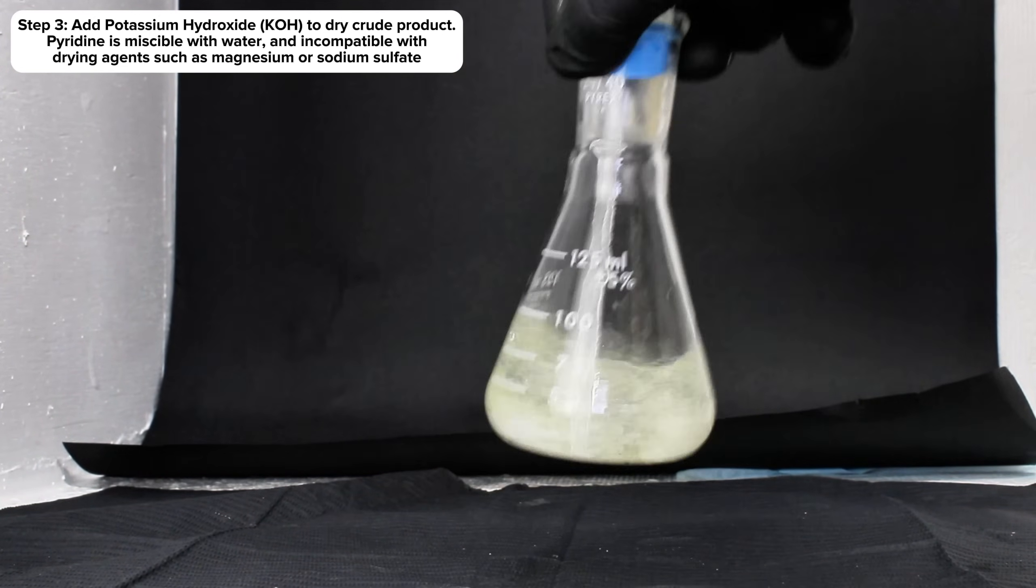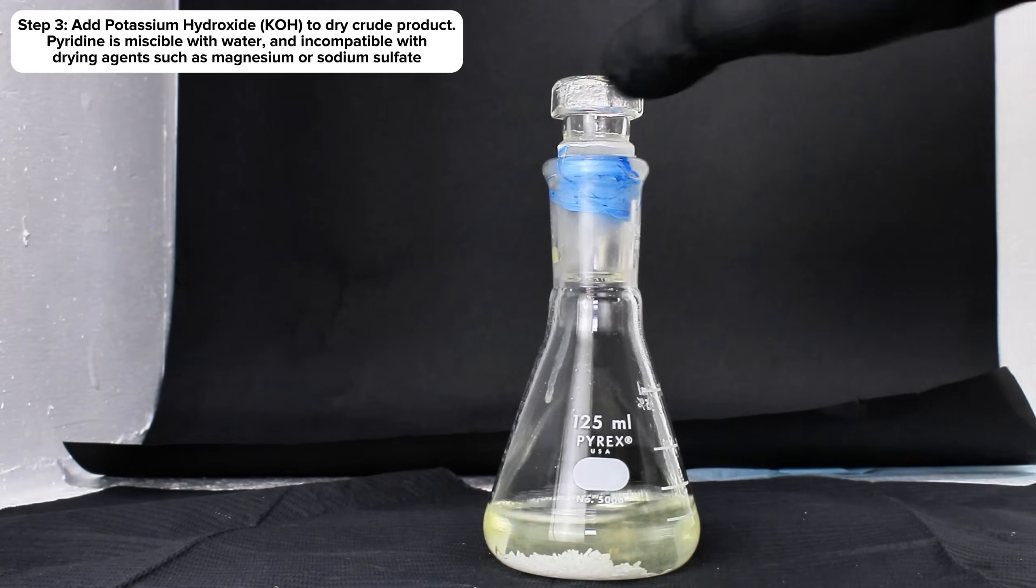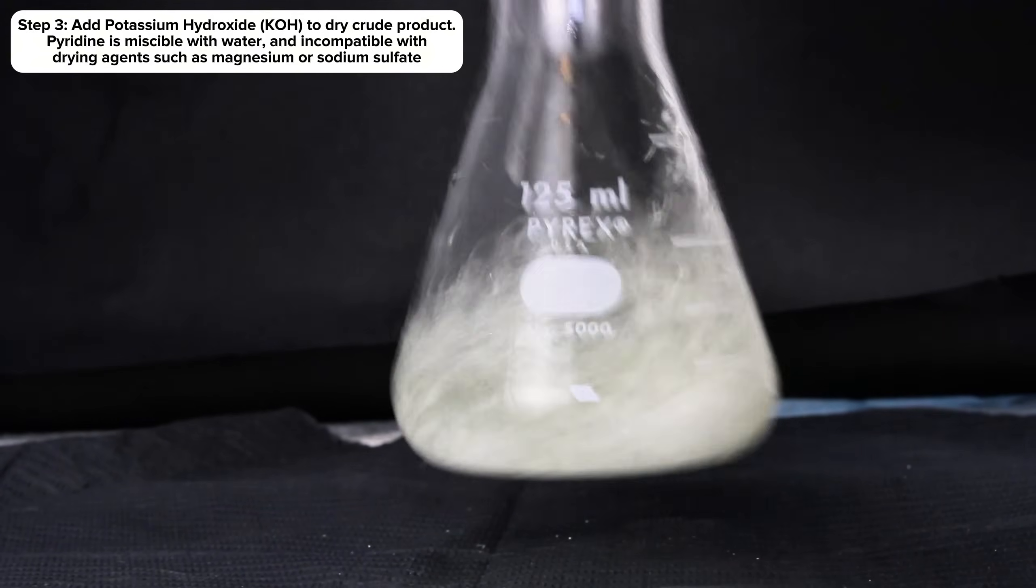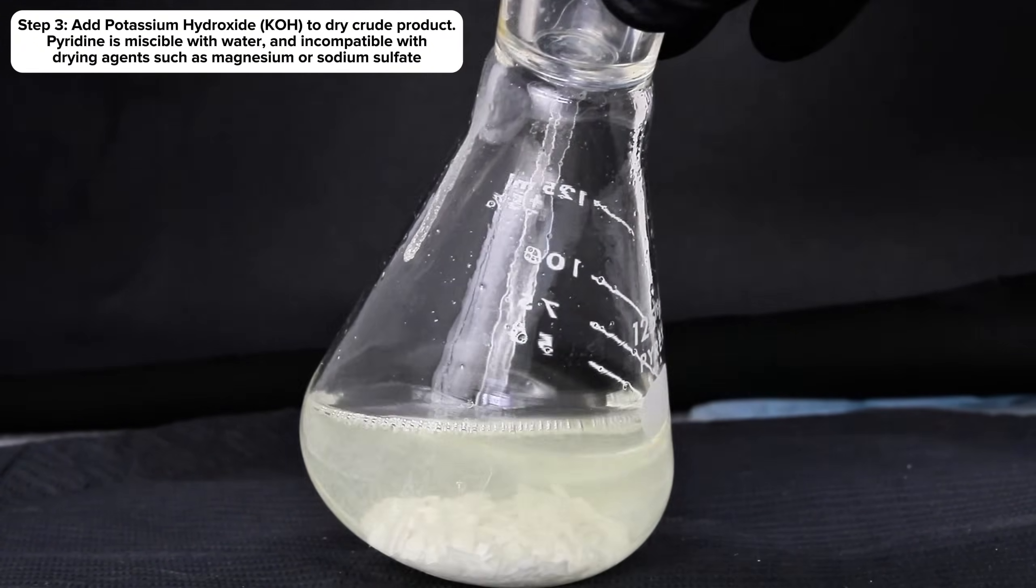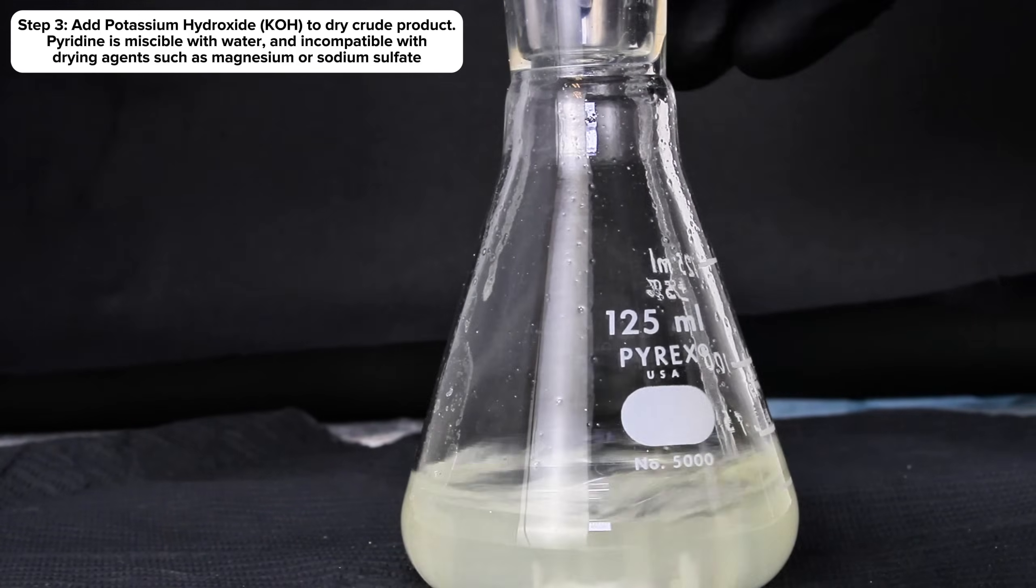and then added a few grams of potassium hydroxide. The potassium hydroxide will work to effectively pull any water out of the crude pyridine, and to give this enough time to happen, I went ahead and let the flask sit overnight.